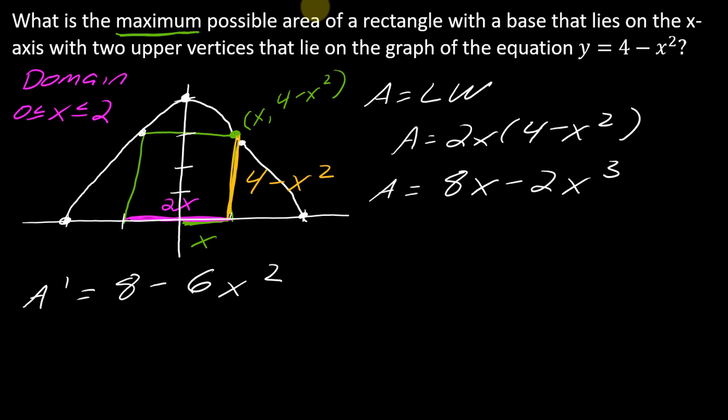Okay. So 8 minus 6x squared. So if I set that equal to 0, so 8 minus 6x squared and set it equal to 0, well, I could factor out negative 2 from that. And then I get 3x minus 4, 3x squared minus 4 equals 0. And if I solve this,